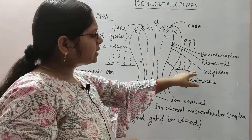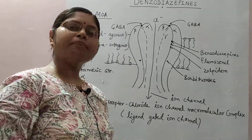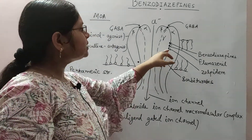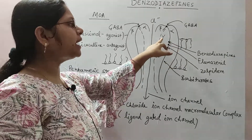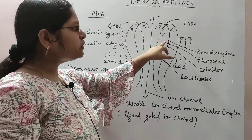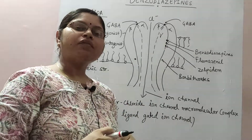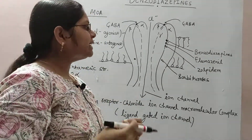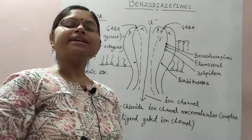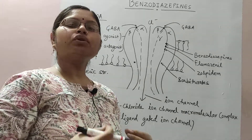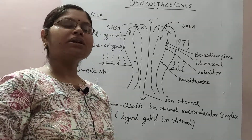Another drug shown here is Zolpidem, which is a non-benzodiazepine drug. It can also bind between the alpha and gamma subunits, just before the Flumazenil binding site. The mechanism of action of Zolpidem is the same as benzodiazepines — it also increases the time duration of chloride ion channel opening, resulting in hyperpolarization and muscle relaxation.